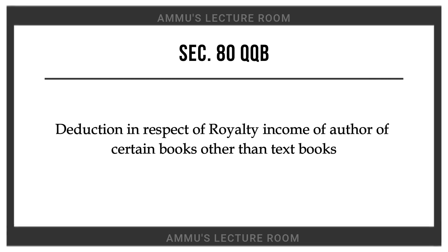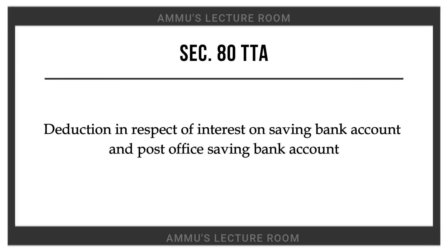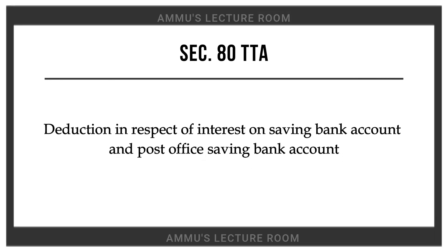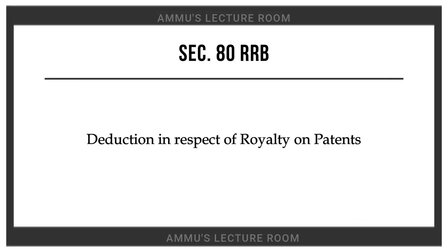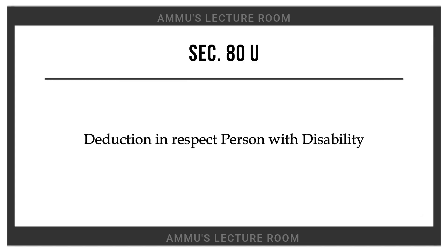Section 80QQB: deduction in respect of royalty income of author of certain books other than textbooks. Section 80TTA: deduction in respect of interest on savings bank account and post office savings bank account. Section 80RRB: deduction in respect of royalty on patents. Section 80U: deduction in respect of person with disability.